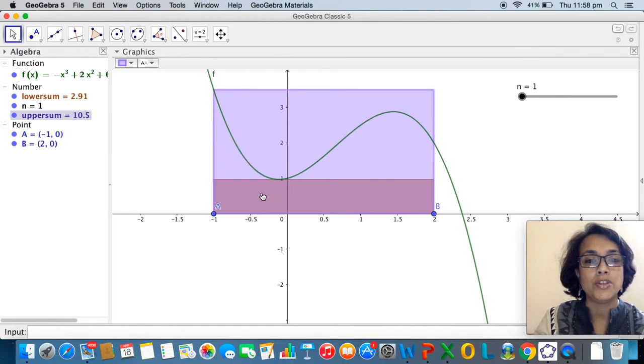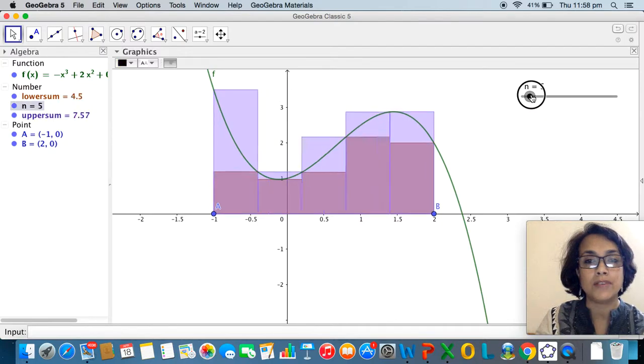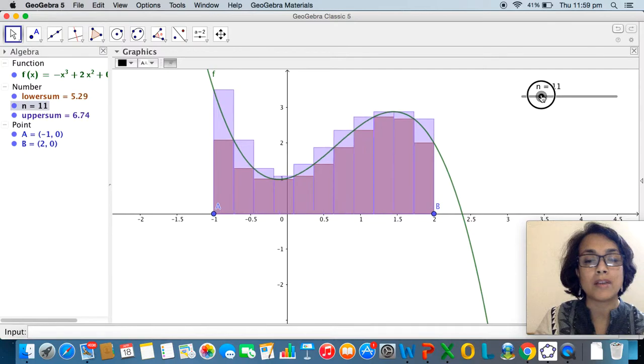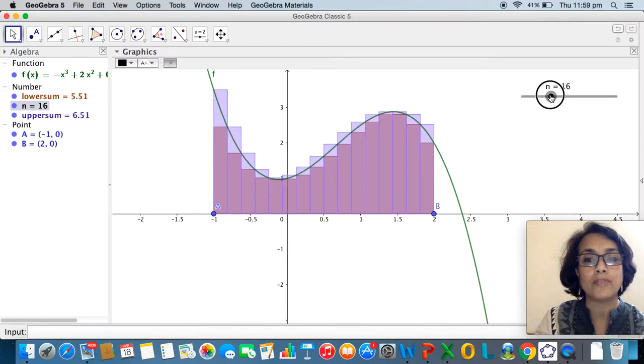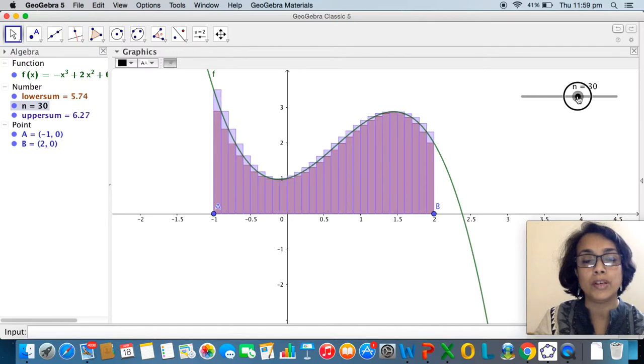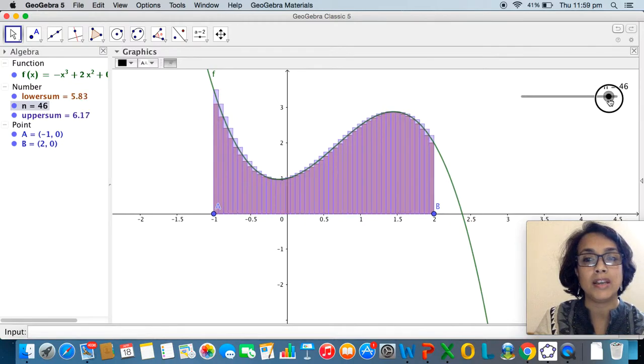So the magenta portion represents the lower sum and the purple portion represents the upper sum. Look what happens as I drag n: you can clearly see the upper sum approaching the curve from above the curve and the lower sum approaching the curve from below, both approximating the area under the curve.